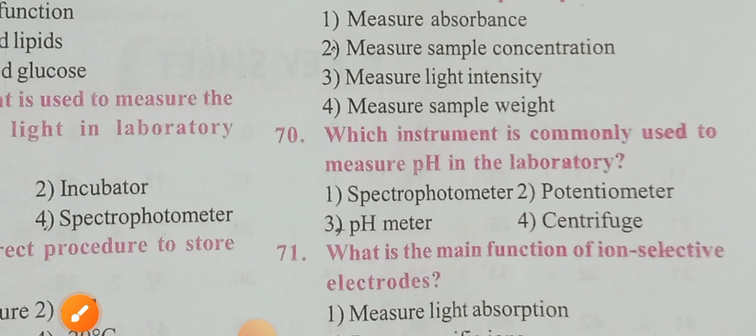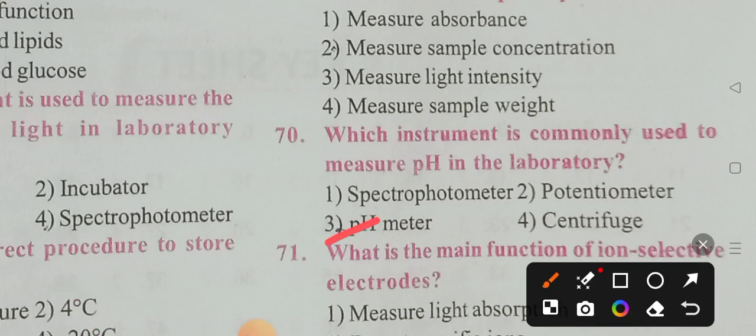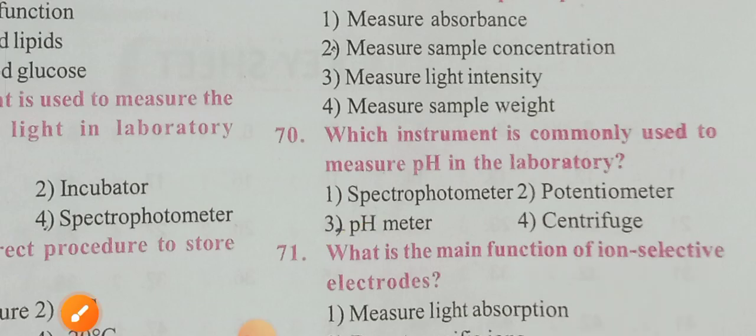Question 70: Which instrument is commonly used to measure pH in the laboratory? Options: spectrophotometer, potentiometer, pH meter, centrifuge. Option 3 is the correct answer — pH meter.